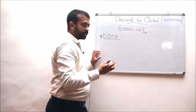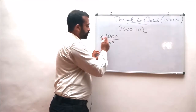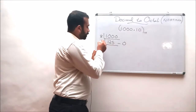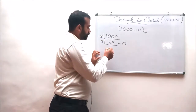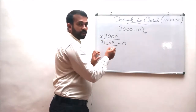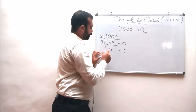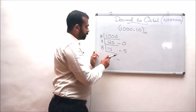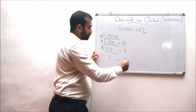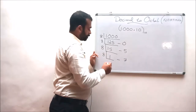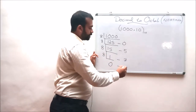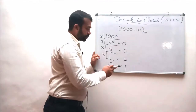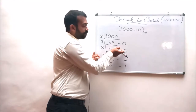We divide 1000 by 8. 1000 divided by 8 results in 125 with a remainder of 0. When 125 is divided by 8, we get 15 with a remainder of 5. When 15 is divided by 8, we get 1 with a remainder of 7. And when 1 is divided by 8, the quotient is 0 with a remainder of 1. So the decimal number 1000 is equivalent to 1750 in octal.